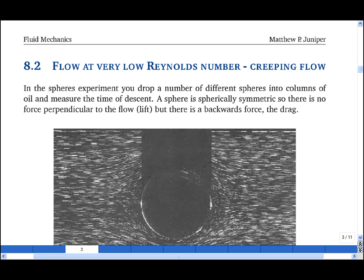One of these spheres drops very slowly, and one of these oils is very viscous. In this situation, the flow creeps around the sphere, and the Reynolds number, which is the ratio of inertial to viscous forces, is very, very small. This scenario, in which the viscous forces dominate, is known as creeping flow.